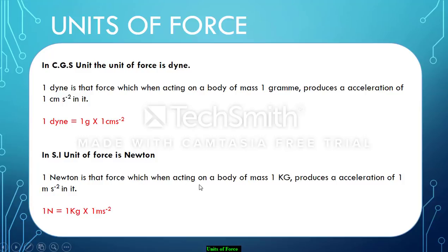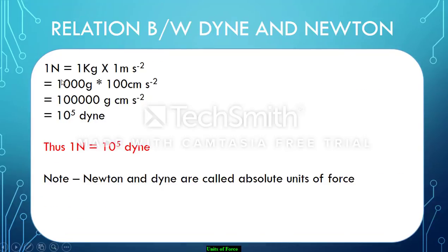One Newton is that force which, when acting on a body of mass 1 kg, produces an acceleration of 1 meter per second square. Now we will be seeing what is the relationship between 1 Newton and 1 dyne. One Newton, I have broken here in several steps to actually deduce the formula. We can see that 1 Newton is equal to 1 kg mass into 1 meter per second square acceleration.